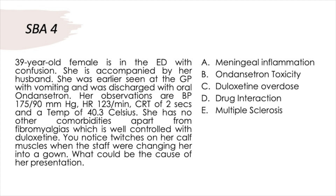A 39-year-old female presents with confusion. She was earlier seen at the GP with vomiting and discharged with oral ondansetron. Her observations show BP 175/90, heart rate 123, CRT 2 seconds, and temperature 40.3°C. She has fibromyalgia well controlled with duloxetine. Staff notice twitches on her calf muscles when changing her into a gown.